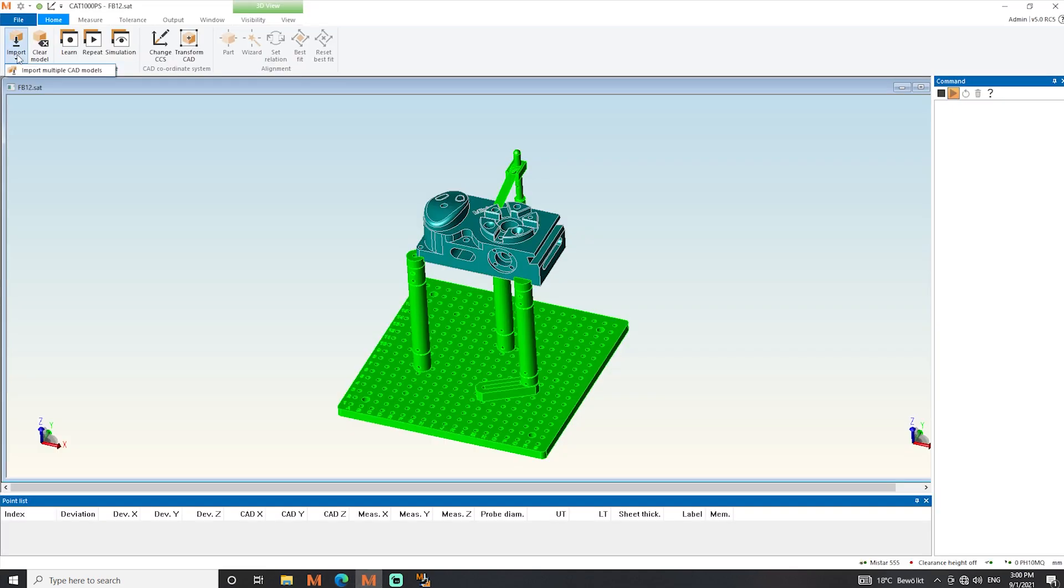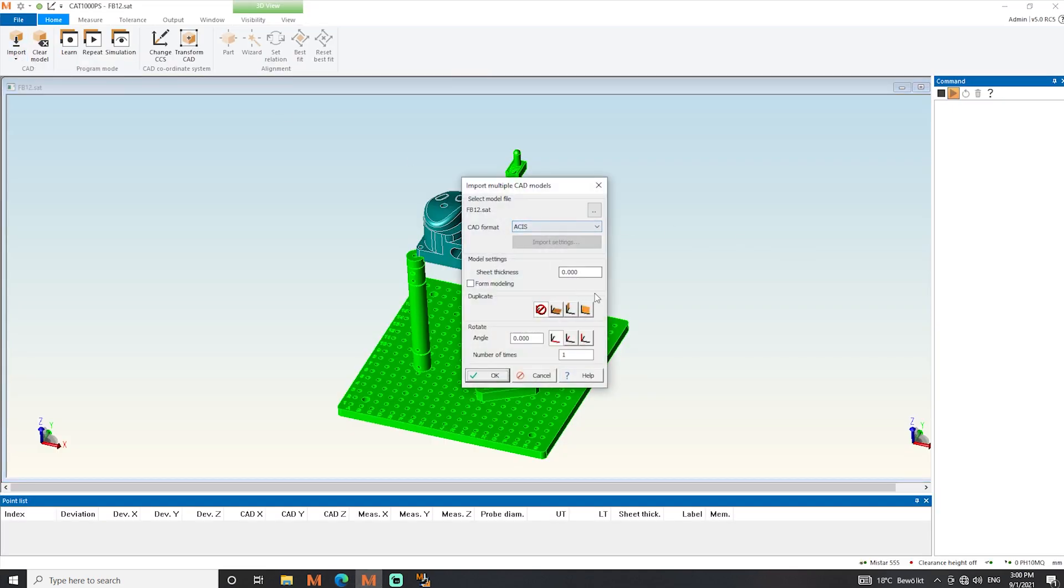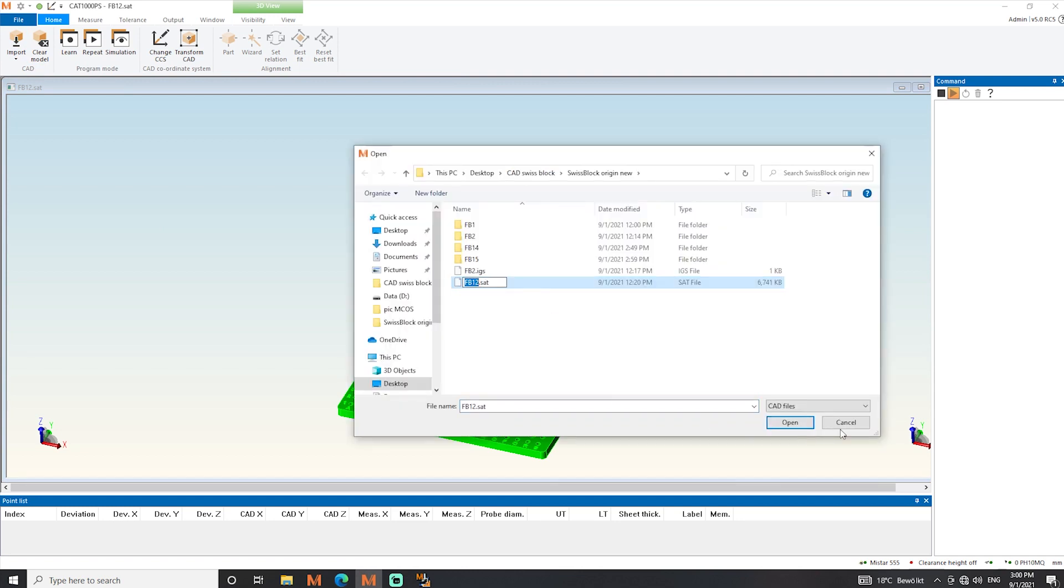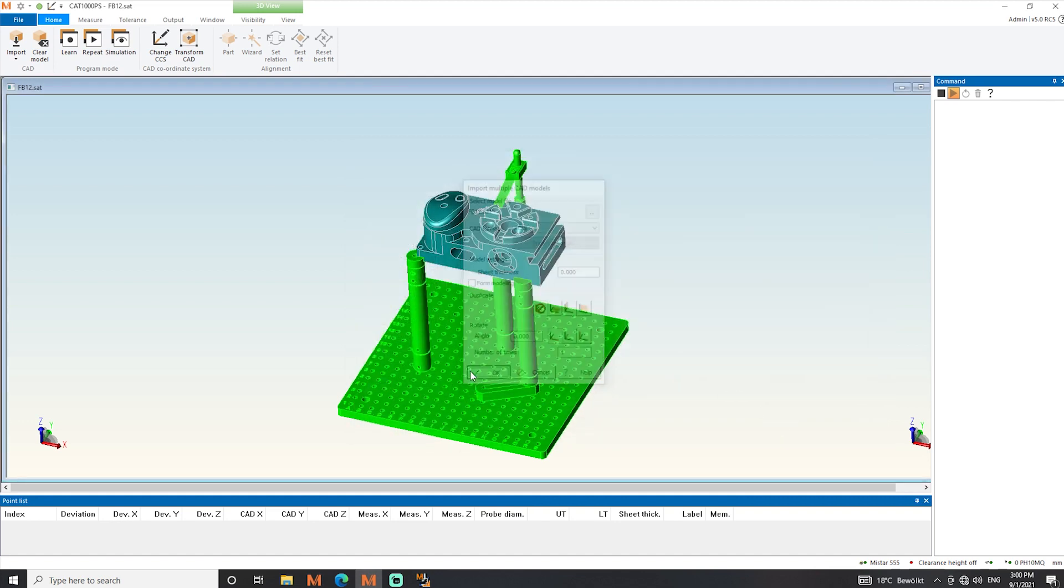Then you can load the fixture file into the mCosmos 5 software and start the actual part programming process. The fixture builder software is really easy to use and time saving.